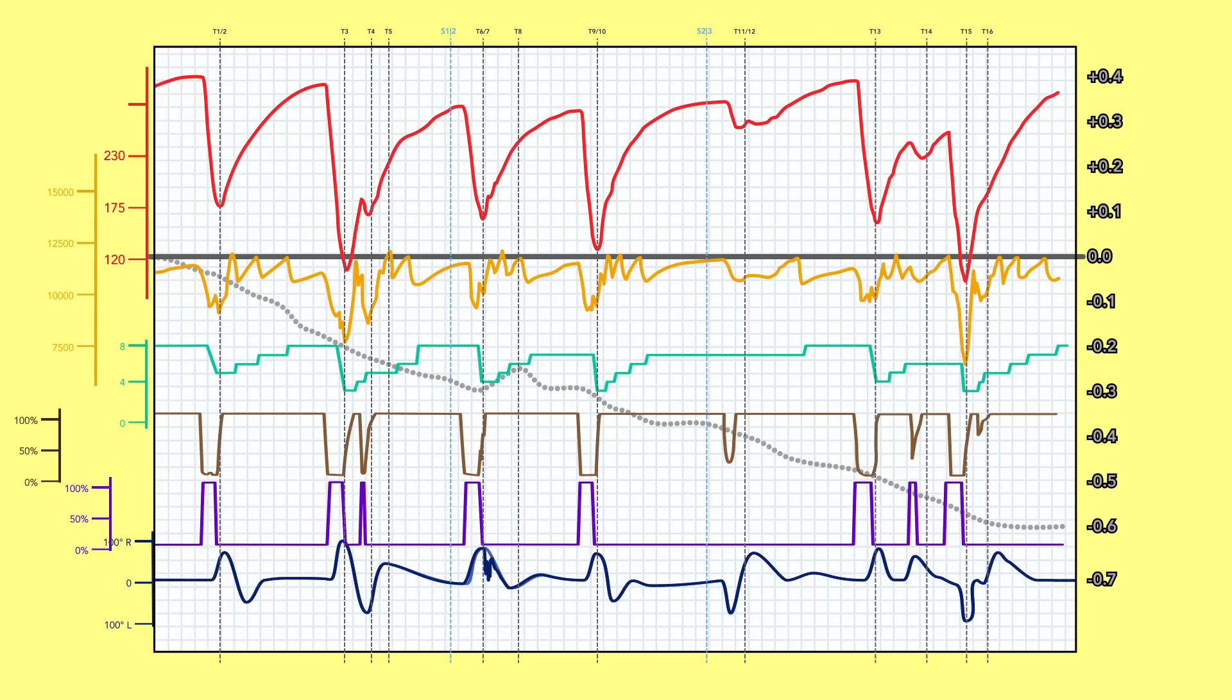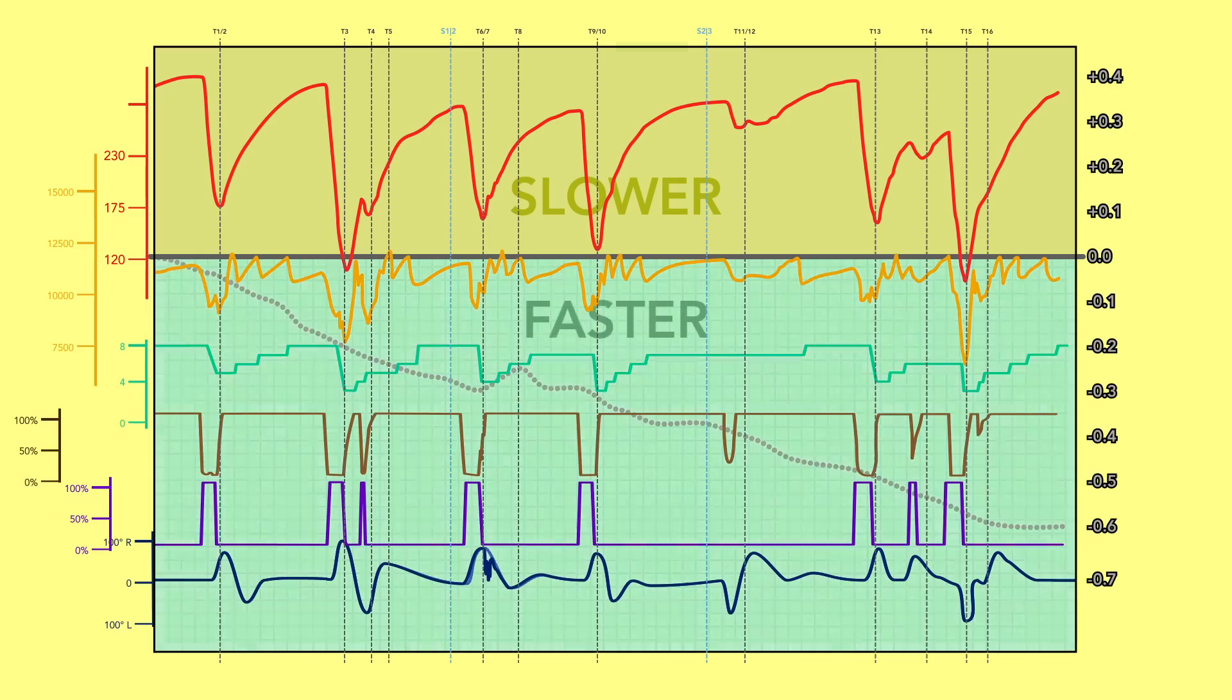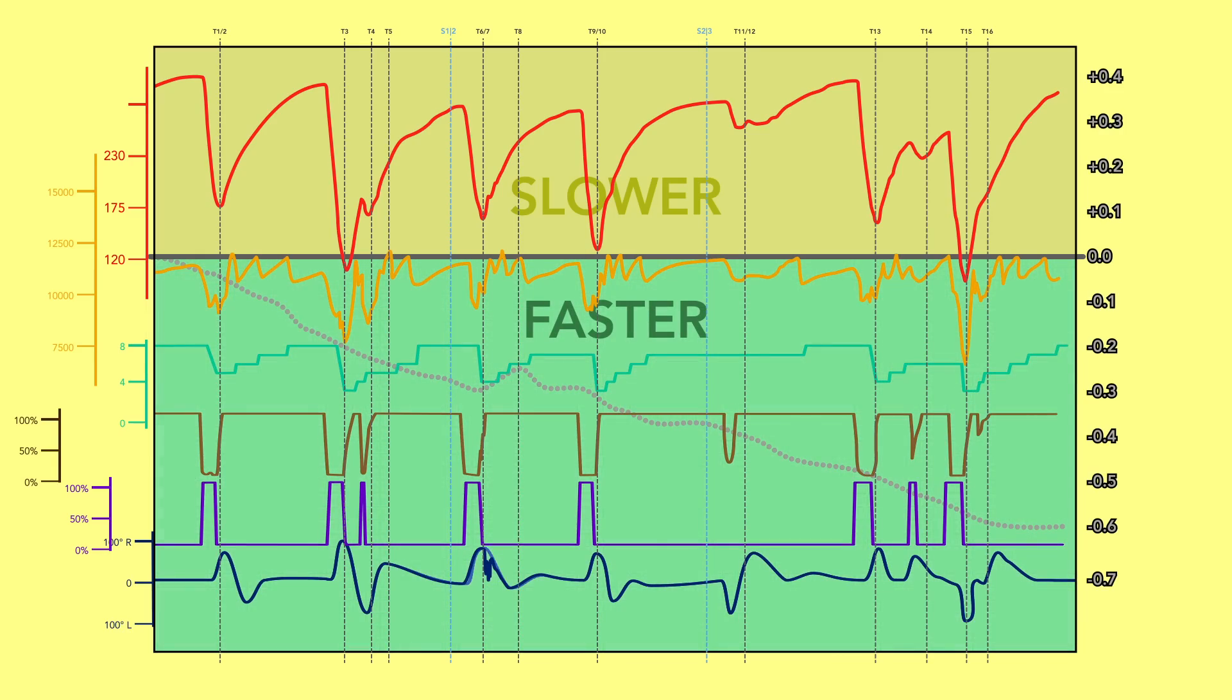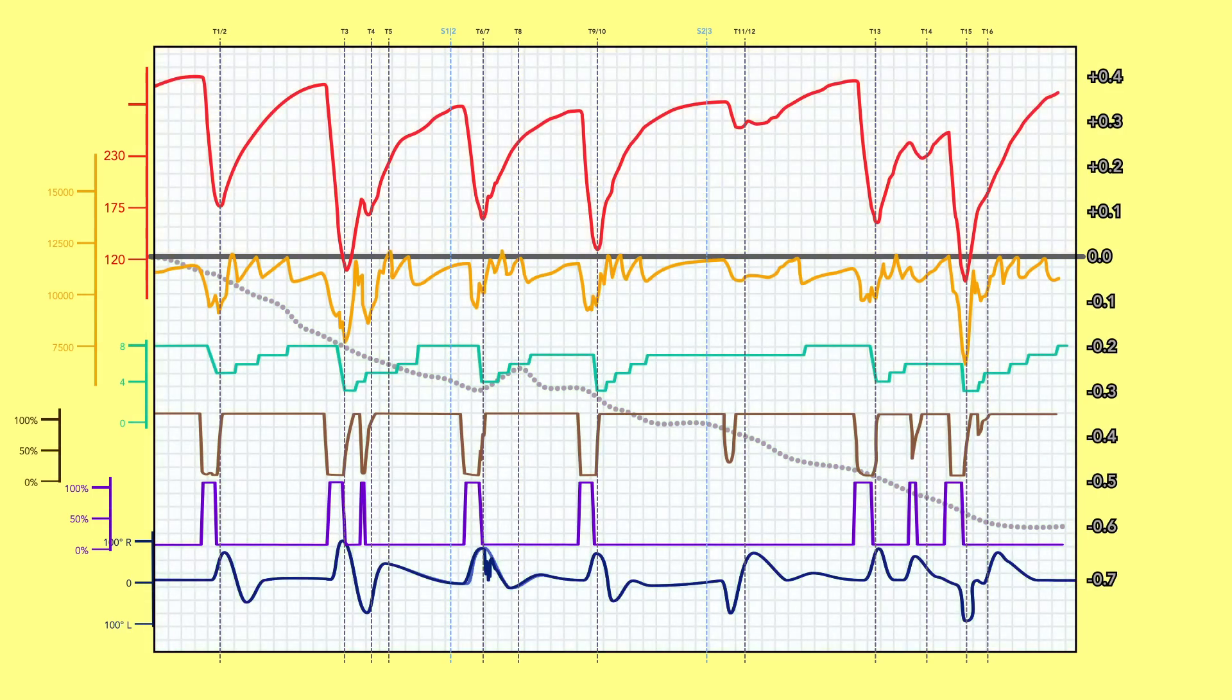So if this line is at 0, you're on an identical lap time at this point. If the line is below 0, you're ahead. Above 0, you're behind. So we can see that over the course of the whole lap, our lap ends up being about 6 tenths faster than our teammate. This is good, but there still might be some work to do. If this line is dropping, we're gaining time on our benchmark. But if it's rising, we're losing time. Our teammate is faster. So that might be worth investigating.